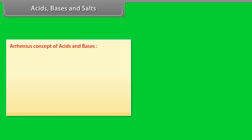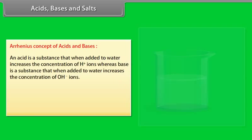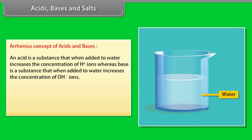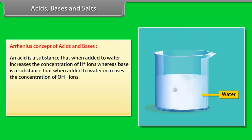Arrhenius concept of acids and bases: An acid is a substance that, when added to water, increases the concentration of H⁺ ions, whereas a base is a substance that, when added to water, increases the concentration of OH⁻ ions.